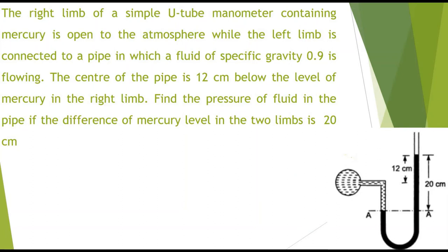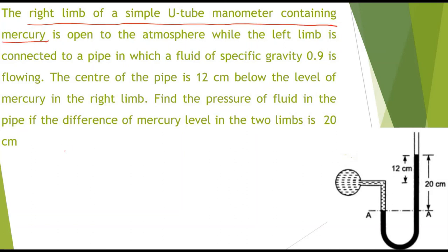Problem: The right limb of a simple U-tube manometer containing mercury is open to atmosphere, while the left limb is connected to a pipe in which a fluid of specific gravity 0.9 is flowing. The center of the pipe is 12 cm below the level of mercury in the right limb. Find the pressure of the fluid if the difference of mercury levels in the two limbs is 20 cm.